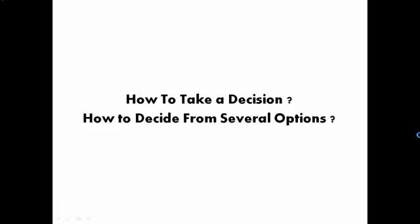Hi guys, today we are going to discuss how to take a decision and how to decide from several options. For example, you have to buy a car, a house, apply to university, buy a smartphone or laptop — any decision in which you have more than one option. How do you decide upon the most correct choice? Here's the solution: a matrix diagram.